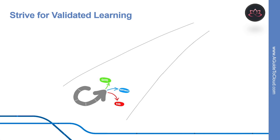And one-third will make no difference. Ideally, you would like to fail fast on those that don't advance the business and double down on those that support the business. Sometimes this is called pivot or persevere. So let's learn how you can strive for validated learning.